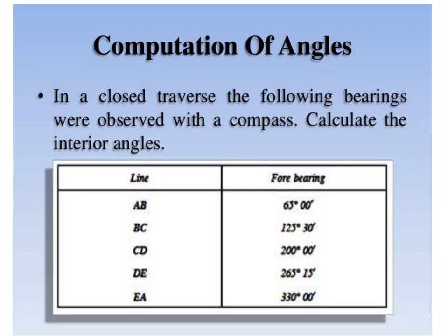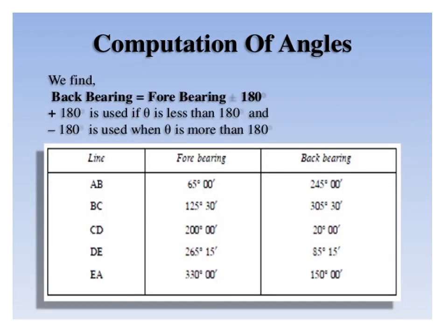This slide refers to computation of angles when the fore bearing of each line is given and you need to calculate the included angles in a closed traverse. In the first step, calculate the back bearing from the fore bearing: when the fore bearing is less than 180 degrees, add 180 degrees; when greater than 180 degrees, subtract 180 degrees to get the back bearing. For line AB with fore bearing 65 degrees, since it is less than 180 degrees, add 180 degrees to get back bearing 245 degrees.